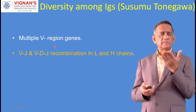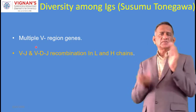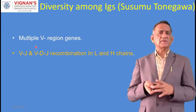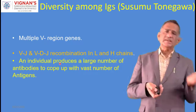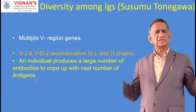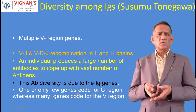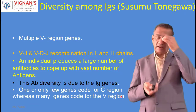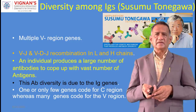Susumu Tonigawa explained this through somatic hypermutation occurring in B cells. B cells are equipped with RAG1 (Rearrangement Activating Gene 1) and RAG2 to make tailored immunoglobulins depending on the type of infection. There are multiple V regions and VJ and VDJ recombination in both the light chain and the heavy chain. An individual produces a large number of antibodies to cope with the vast number of antigens present in pathogens. This antibody diversity is due to immunoglobulin genes - only a few genes code for the constant region, whereas many genes code for the variable regions.